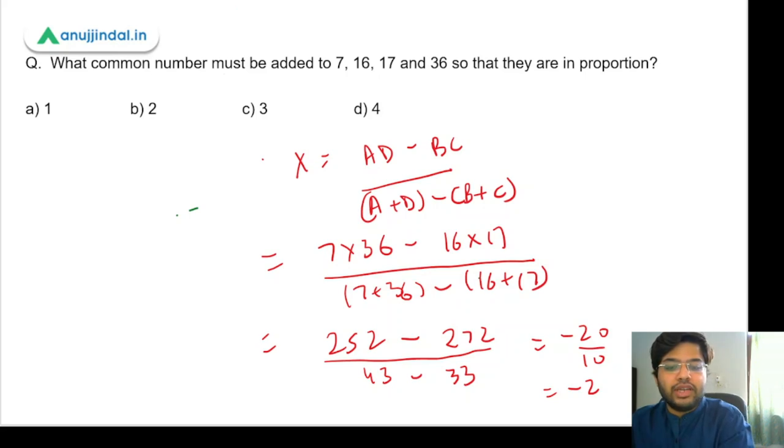So since the question is asking what must be added, you will ignore the negative value and take the number as its positive value. So the correct answer would be option B. And you can see, 7 plus 2 is 9, 16 plus 2 is 18, 17 plus 2 is 19, 36 plus 2 is 38. So they are now in proportion.